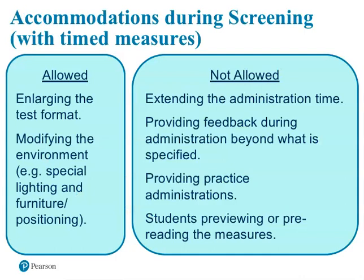There are various accommodations that are allowed and not allowed during the administration of AmesWebPlus measures while benchmark screening. Speed plays an important role in the timed fluency measures; thus, certain accommodations cannot be used without invalidating the norms. The following accommodations are allowed for screening: enlarging the test format, modifying the environment with special lighting, furniture, and student positioning. Accommodations that are not allowed are extending the administration time, providing feedback during administration beyond what is specified, providing practice administrations, and having students preview or pre-read the measures.